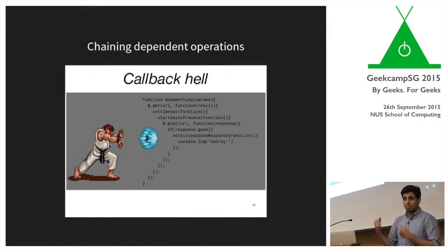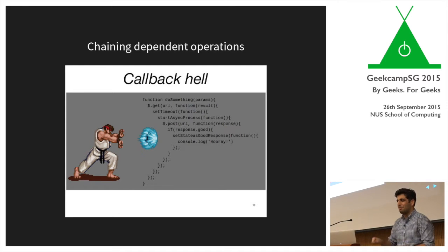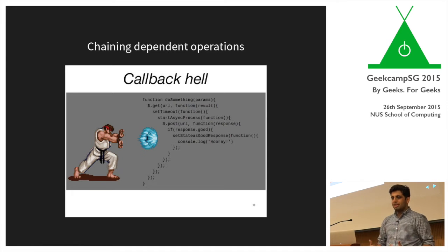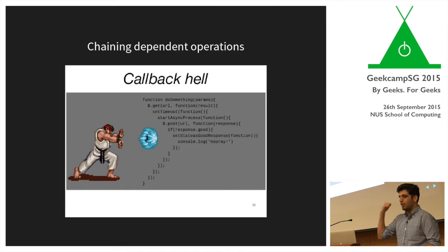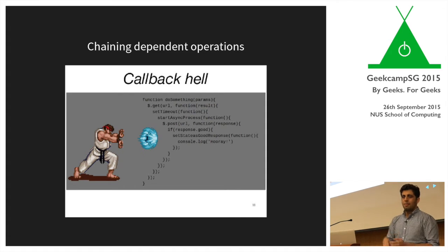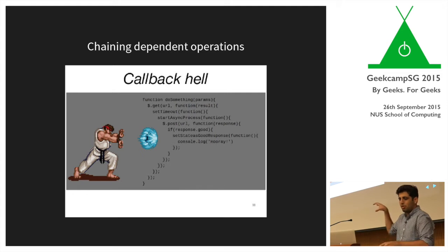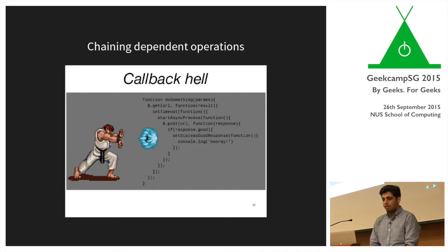Another problem: if you use callbacks — node.js, jQuery, any callback-based API — and you have dependent asynchronous operations, your code will look like the pyramid of doom in no time. Every time you add a new dependency, you add a level to the pyramid, making your code very unreadable very fast. Your scoping rules also get all screwed up, especially in JavaScript.